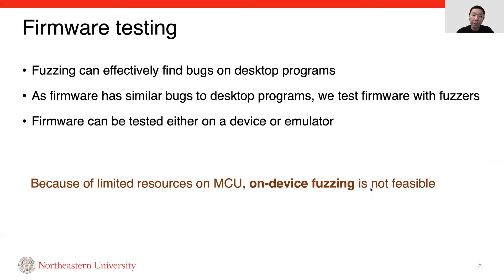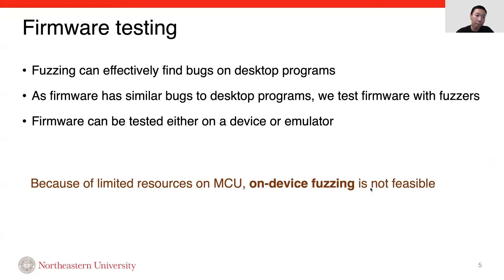Fuzzing, as a dynamic analysis approach, is proven to be effective at finding bugs on desktop programs. As firmware has similar bugs to desktop programs, we test firmware with fuzzers. However, because of limited resources on MCU, on-device fuzzing is not feasible.